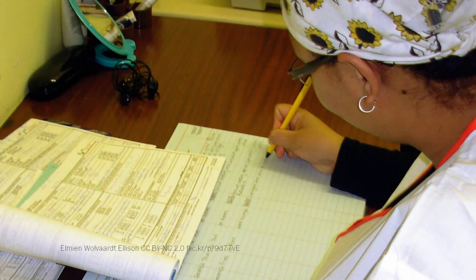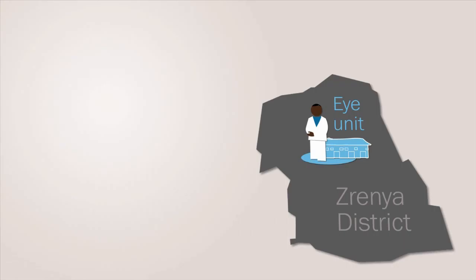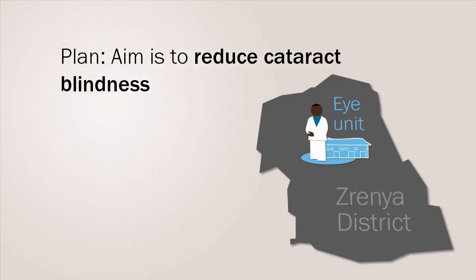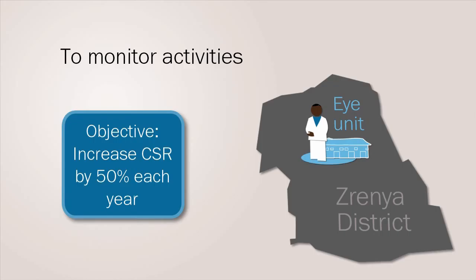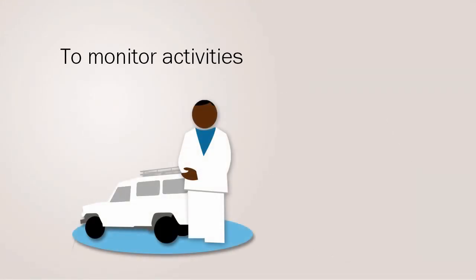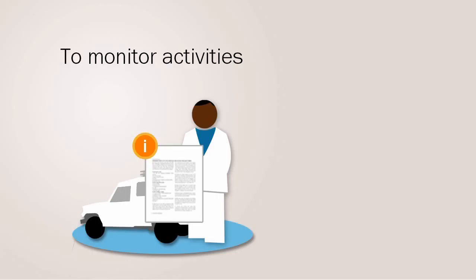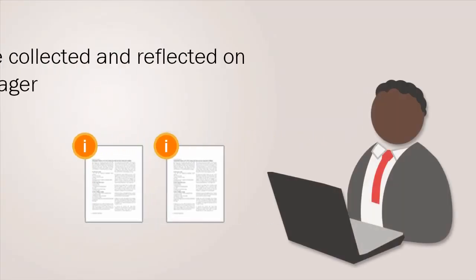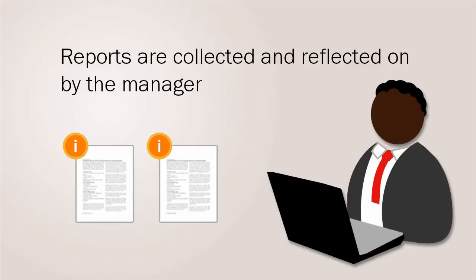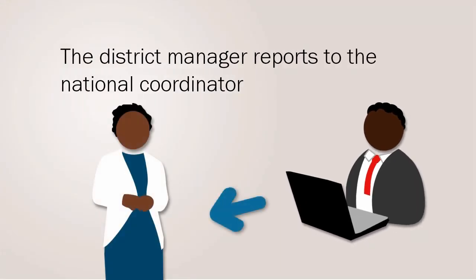Appropriate selection and training of key people to carry out monitoring is essential. As an example, let's return to the Ziranya Eye Unit's plan to reduce cataract blindness in the district. In order to monitor activities towards the objective of increasing cataract surgical rate by 50% each year, the outreach clinical officer must send back a report on the number of outreach surgeries being done each month, and the theatre nurse must also report monthly on the number of surgeries done within the hospital. These reports are collected and reflected on by the manager on a regular basis. It is important that the district manager gives feedback to staff about how the plan is doing. The district manager reports to the national coordinator, and at the end of the program period, it is the final responsibility of the national coordinator to identify resources and address the impact of the program.